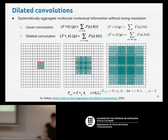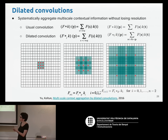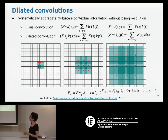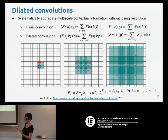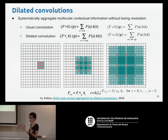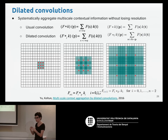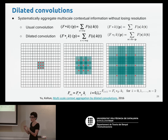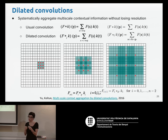Another solution replaces the sequence of pooling operations with dilated convolutions. In dilated convolutions, filters have the same number of weights but are applied differently — so the receptive field increases exponentially with the dilation rate. We don't increase the number of parameters, but we increase the receptive field and have more contextual information without needing pooling operations.